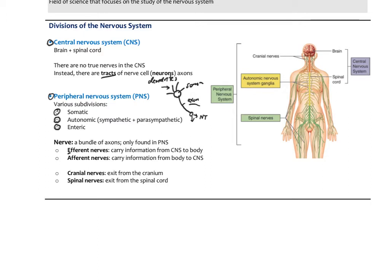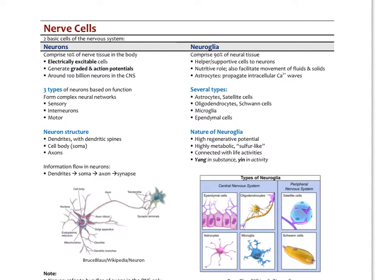There are 12 cranial nerves exiting the cranium, mostly originating from the brainstem, innervating the face, upper shoulder muscles, tongue, and eyes. The spinal nerves exit from the spinal cord — each has a motor branch and a sensory branch going out to different muscles and tissues. In nerve tissue, the two primary cells are neurons and neuroglia, or glial cells. Neurons comprise about 10 percent of nerve tissue, neuroglia about 90 percent.